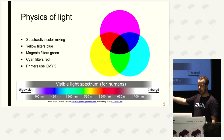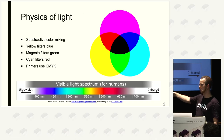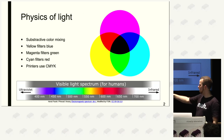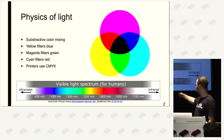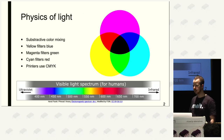One last physics point: light is a wave and it has a certain length. Depending on how long the wave is, we see a different color. Very short wavelengths are ultraviolet — we can't see that. Then it goes from violet, blue, cyan, green, yellow, orange, to red. Everything above red is infrared, and we can't see that either. I promise that's it for physics.